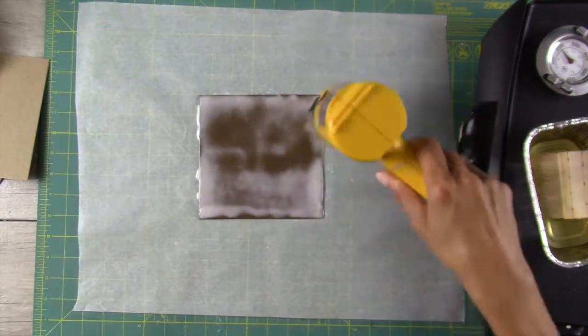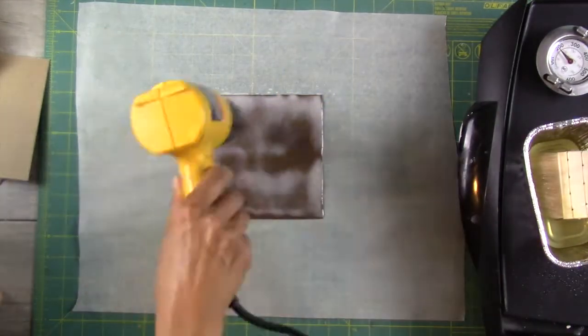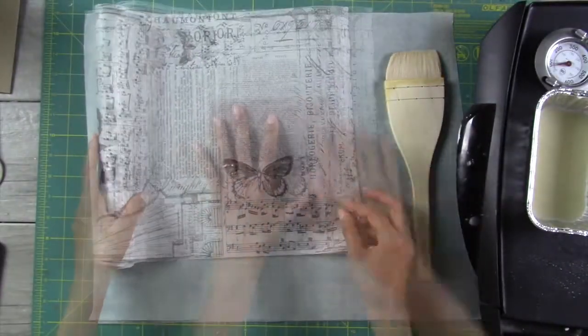Once I have a good encaustic base built up I usually like to put at least three or four coats on there. I can then go ahead and add the rest of my mixed media.